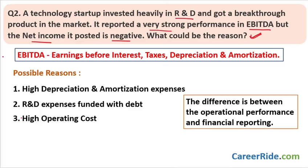The concept of EBITDA is very important here. EBITDA means earnings before interest, taxes, depreciation, and amortization. Since this is a startup that has invested heavily in R&D, there is a possibility it has high depreciation and amortization expenses, which will impact net income but will not impact EBITDA — this can be the first possibility. The second possibility is that the startup funded its R&D with debt, meaning it would have interest payments that impact net income but not EBITDA.